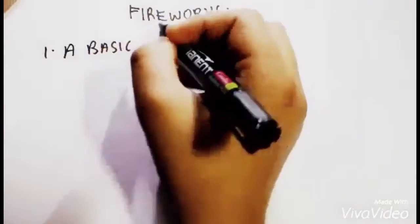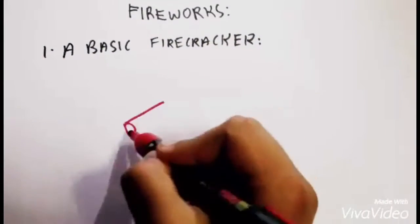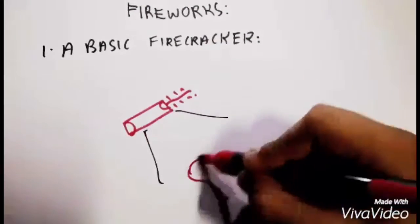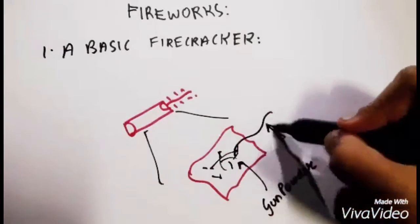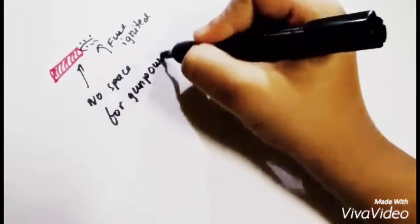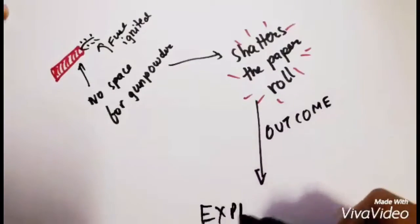How does a basic firecracker work? A basic firecracker is just some gunpowder and a fuse tightly packed inside a sheet of paper. Something like this. But how does this work? Once the fuse is ignited, there is no space for the gunpowder to escape the roll of paper. Hence, it shatters the paper roll and the outcome is an explosion.